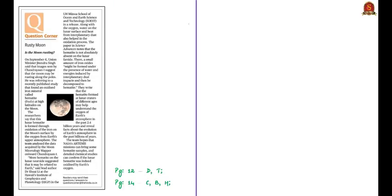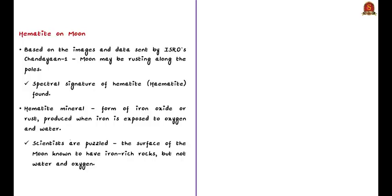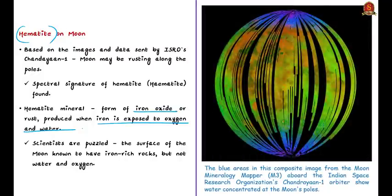This news article is about recent findings about the moon based on images and data sent by ISRO's Chandrayaan-1. The finding is that the moon may be rusting along its poles, because researchers have found spectral signatures of hematite. Hematite is a form of iron oxide — rust — which is produced when iron is exposed to oxygen and water. This has puzzled scientists because the surface of the moon is known to have iron-rich rocks, but the moon is not known for the presence of water and oxygen, which are needed to interact with iron to create rust.